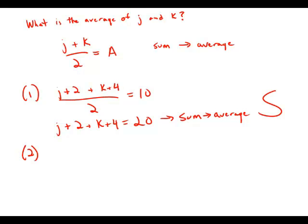Statement number two, forget about statement number one. We'll focus exclusively on statement number two now. The average of j and k and 14 is 10. So j plus k plus 14 over three equals 10.